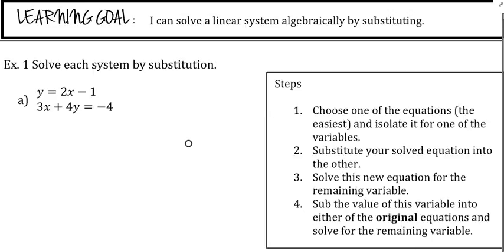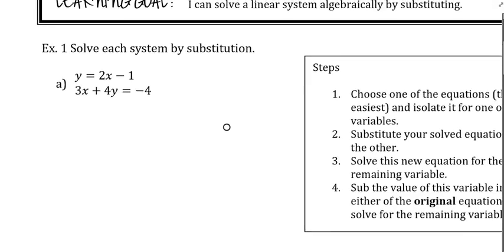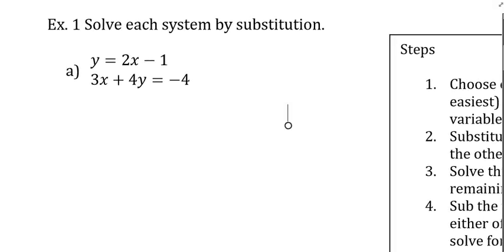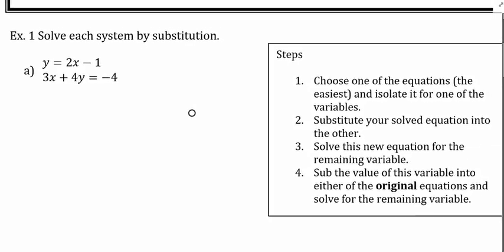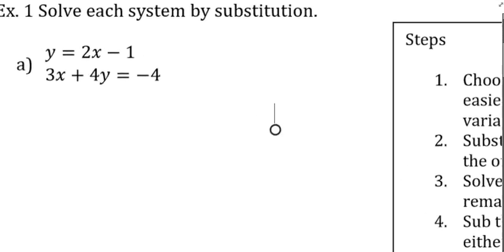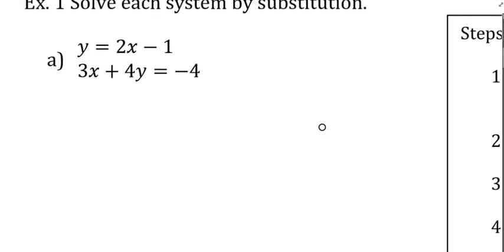Questions before we start? Step number one says choose one of the equations, the easiest, we'll talk about that later, like how you tell which one's the easiest, that'll be clear later on, and isolate it for one of the variables. What does that mean? Somebody remind me what that means to isolate.